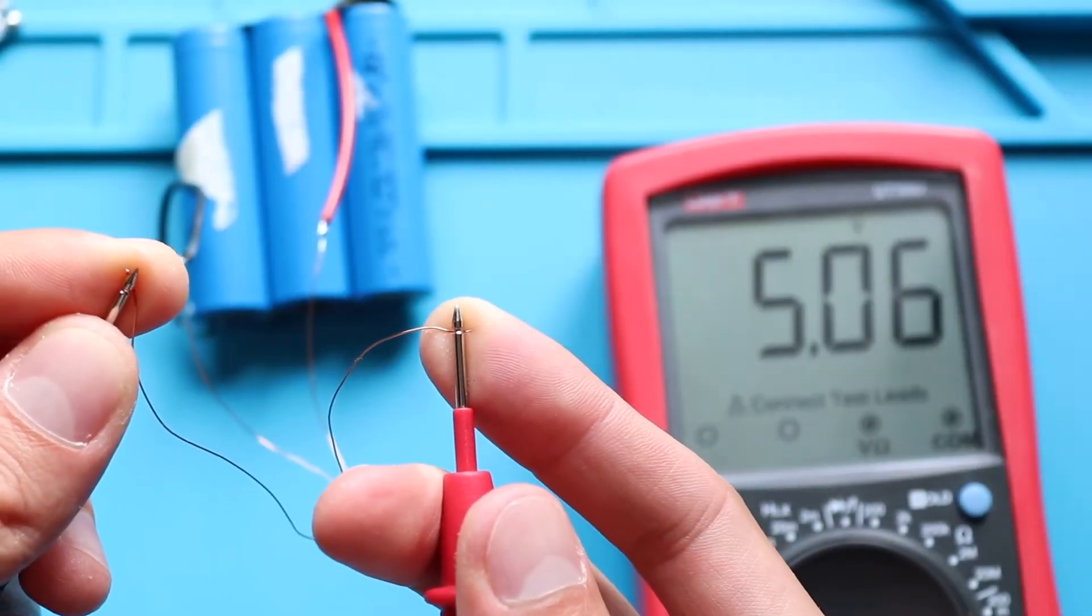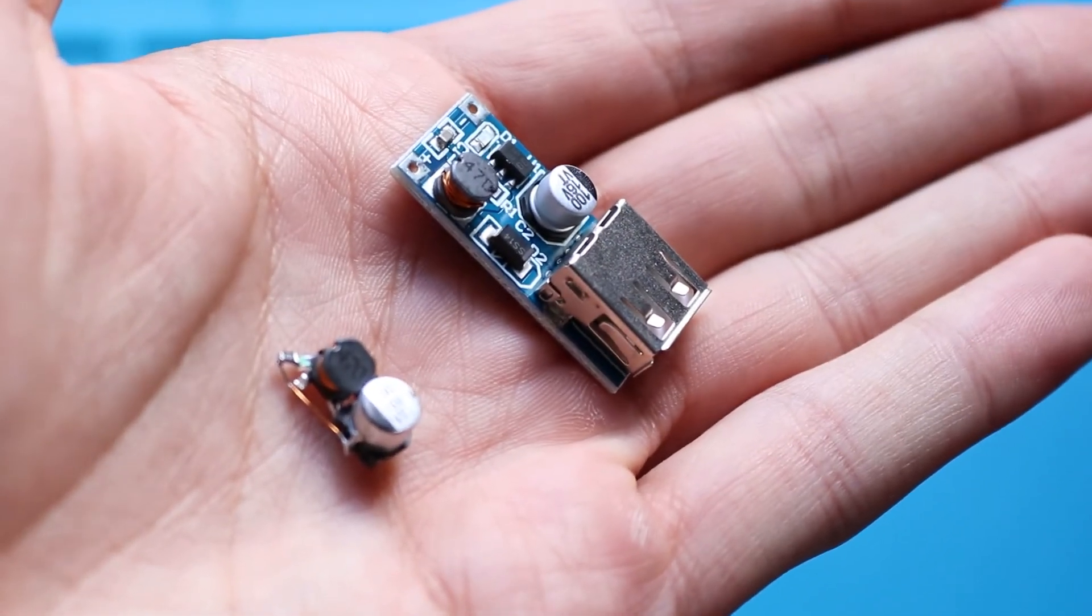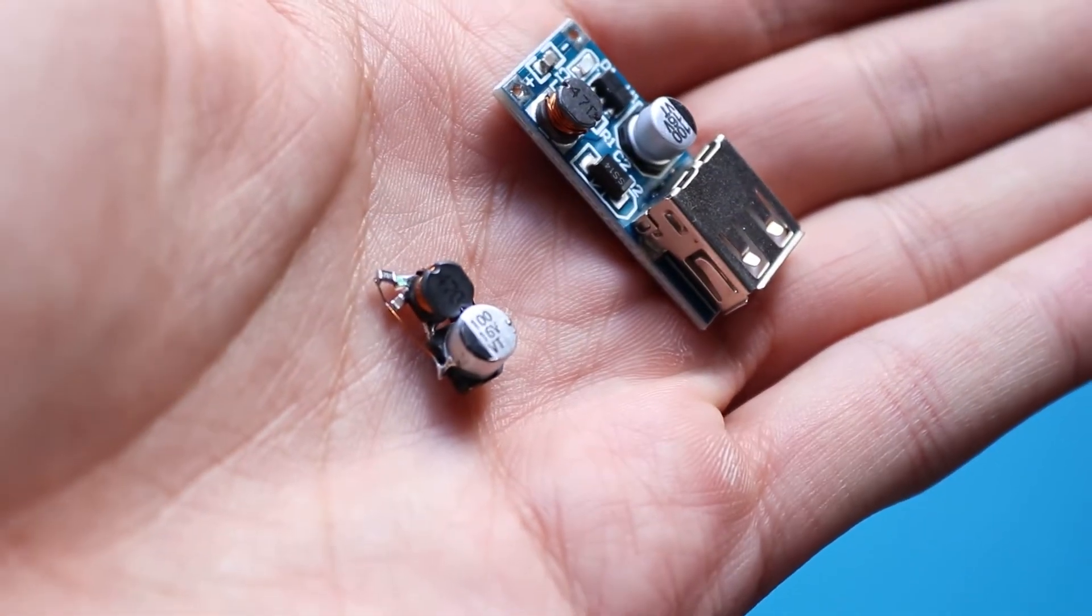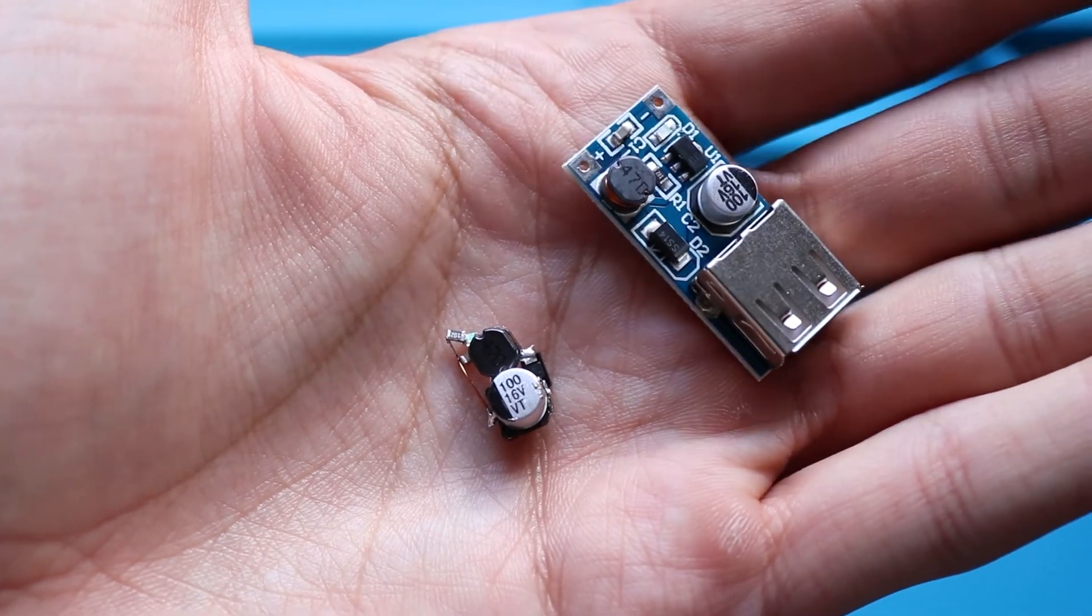Let's now compare its size with a PCB. Size of the PCB is 15 by 20 mm without a USB connector of course. And the size of the reassembled circuit is only 15 by 7.5 mm. So that's almost three times smaller.